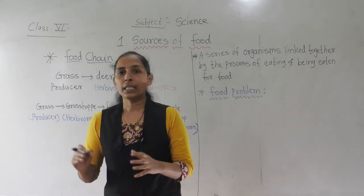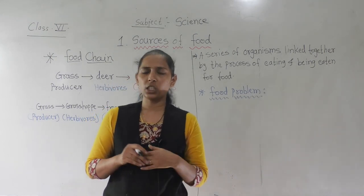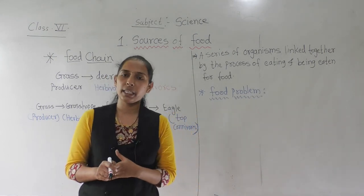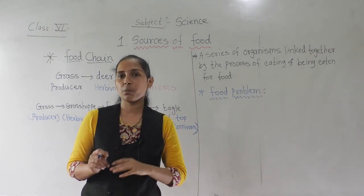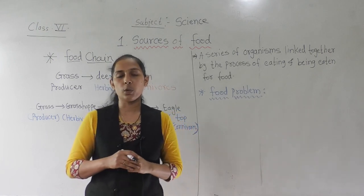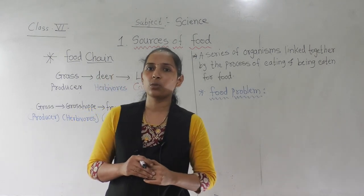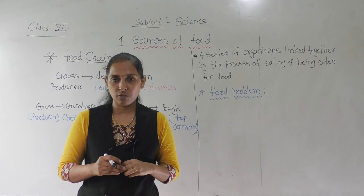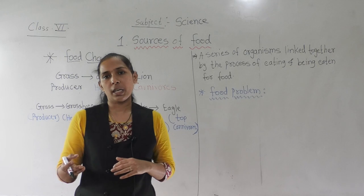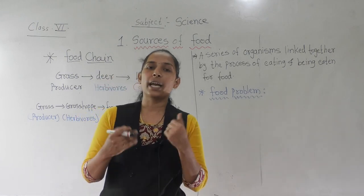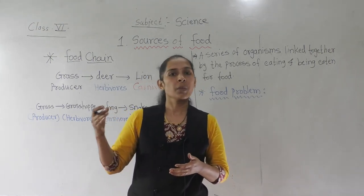As we know, on our earth, the sun is the main source of energy. Each and every living organism is getting the energy from the sun. But there is a very big difference between the green plants and the other organisms. The green plants are the only living organisms that can utilize the solar energy radiated by the sun. Other living organisms cannot take that energy or utilize it to do their further activities.